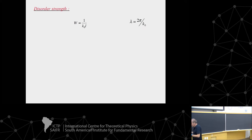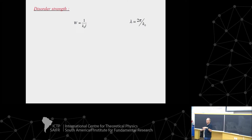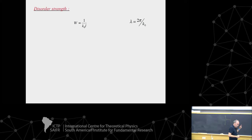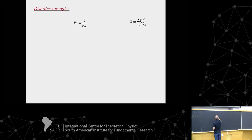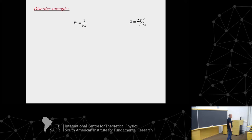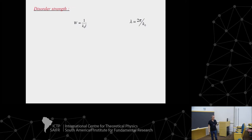I generically defined a disorder parameter W. This parameter W, which measures the strength of disorder, is defined as 1/(k₀ l), where k₀ is the wave number and l is the elastic mean free path. Weak disorder means the wavelength is much smaller than the elastic mean free path, which means this parameter is small. So weak disorder is a small dimensionless parameter W.